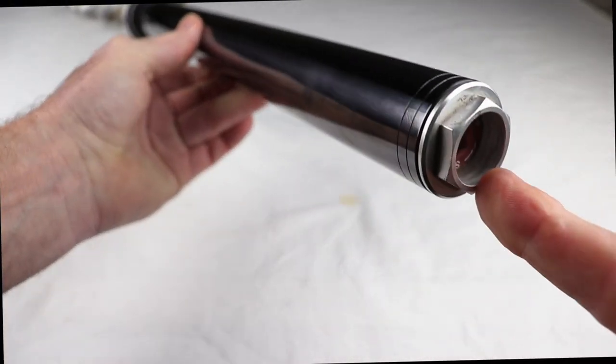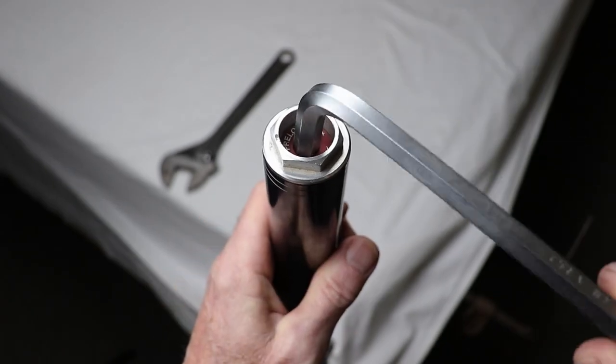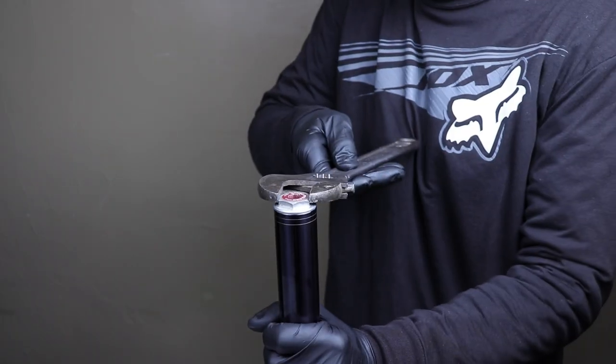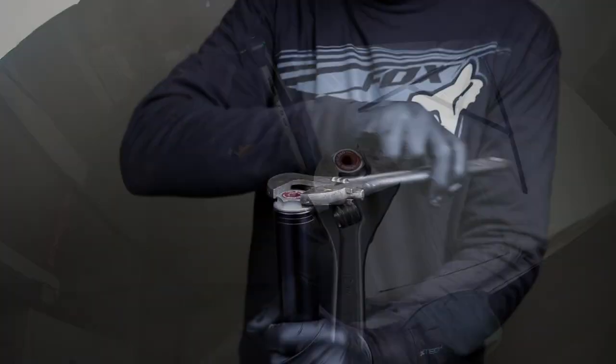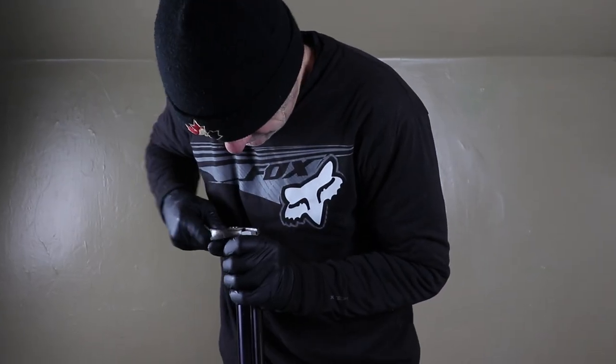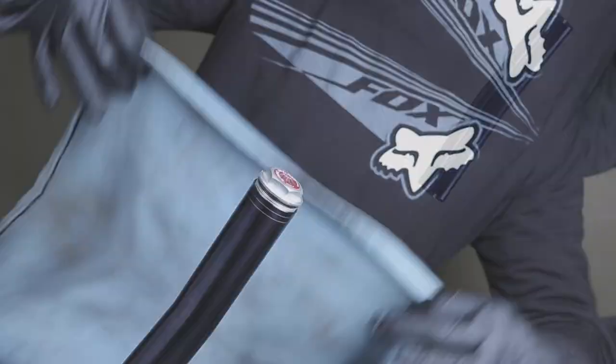Now we're going to take off the top cap, but before we do that, remove as much preload out of that spring as possible because there could be a considerable amount of tension in that spring. On these forks, whatever you do, don't stick your face over top of this as you're taking it off.